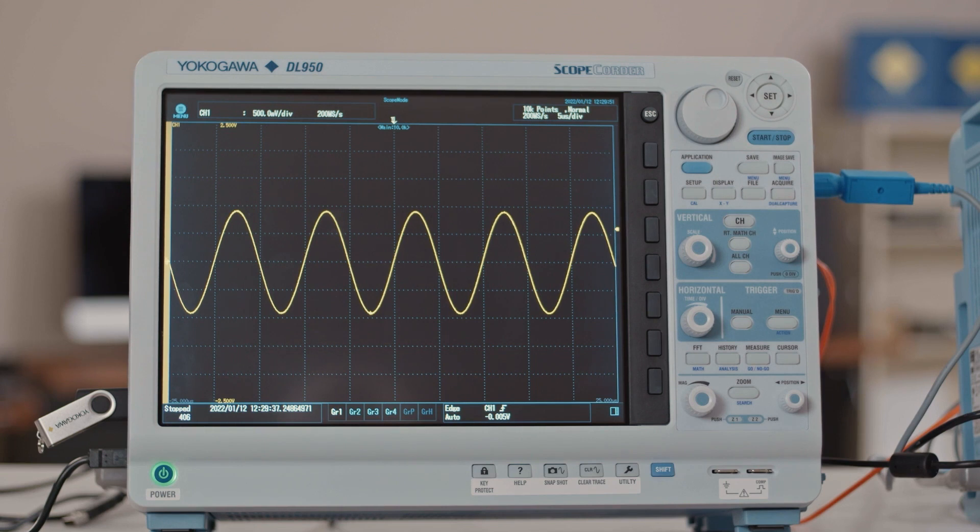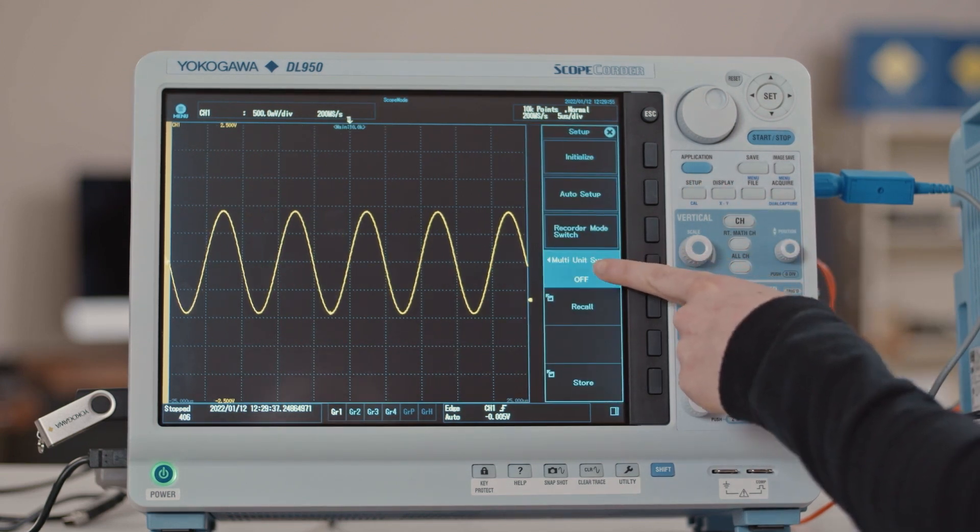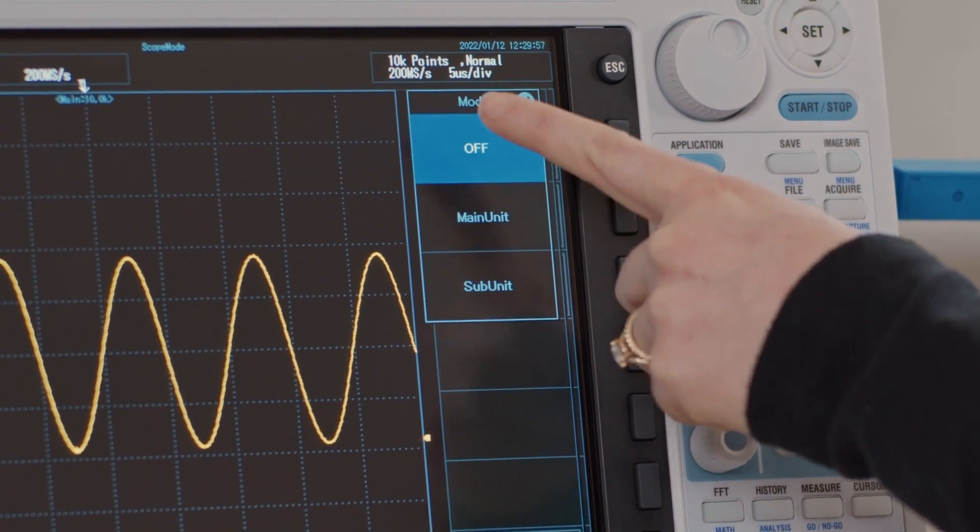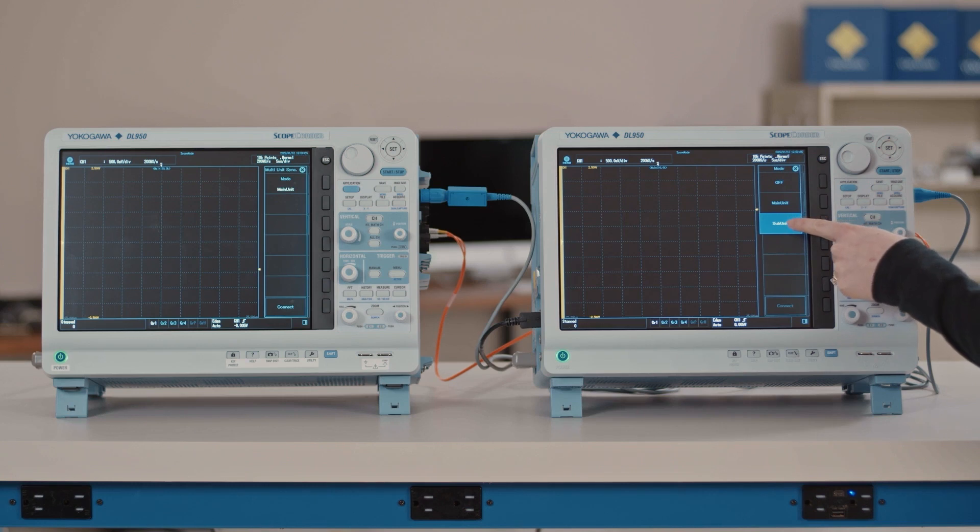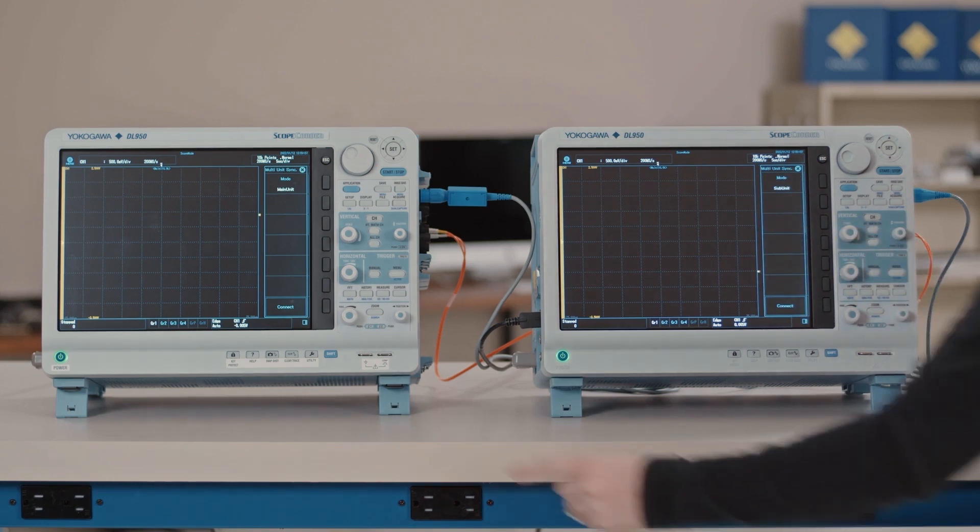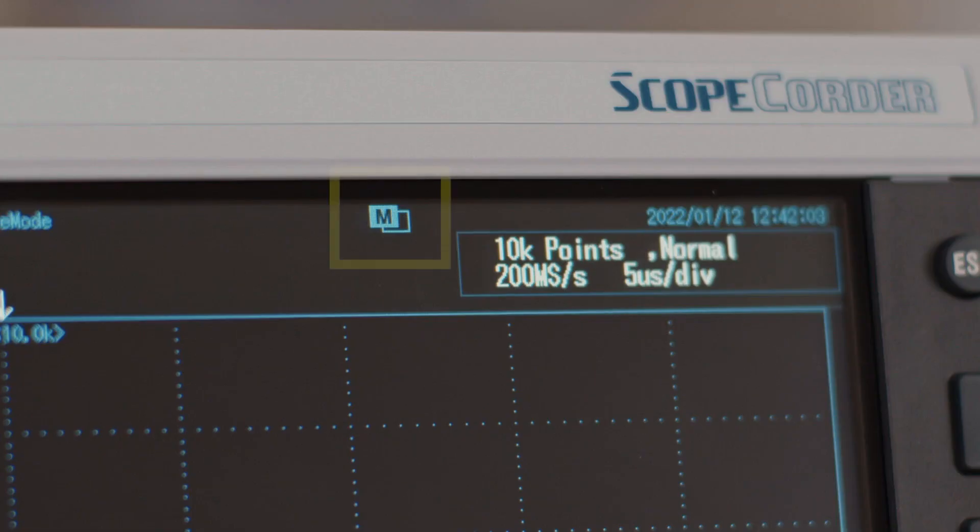To configure the main and subunits, press the setup button. Tap multi-unit sync. Set one of the units to main unit and the rest to subunit. On all the units, tap connect. At the top of the screen, it will show that connection has been established.